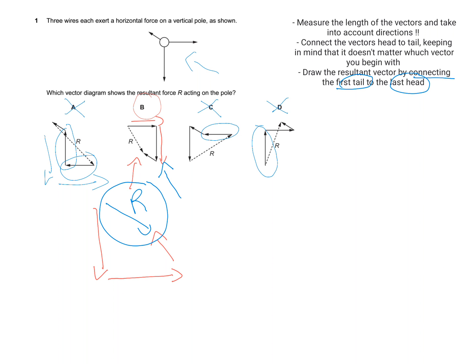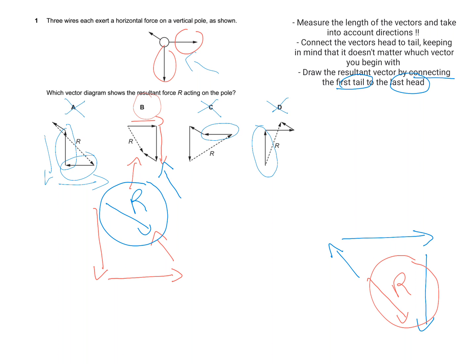If we go ahead and try another way — starting with the diagonal vector, then horizontal, then vertical — we get the same answer. So whether you start with the horizontal, vertical, or diagonal vector first, we still end up with the same resultant vector.